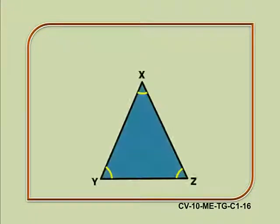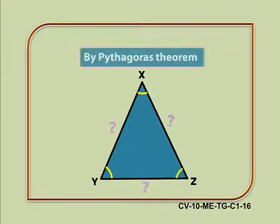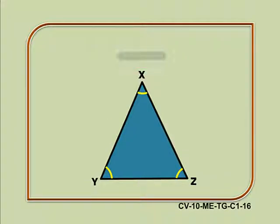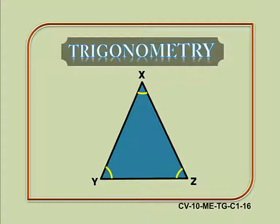Now consider this triangle. Is it possible to find the length of the side using Pythagoras Theorem? No, it is not possible. Then how can we find them? Yes, the answer is in Trigonometry. Now let us understand the fundamentals of Trigonometry.